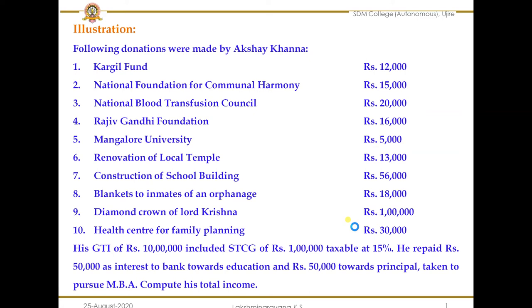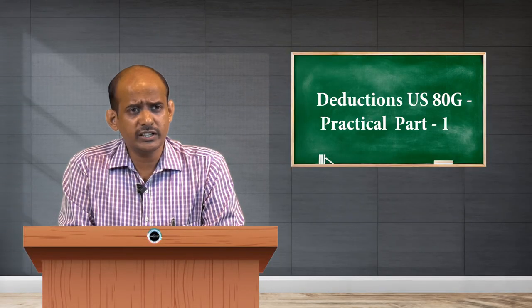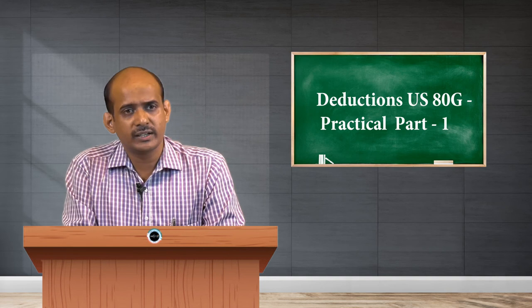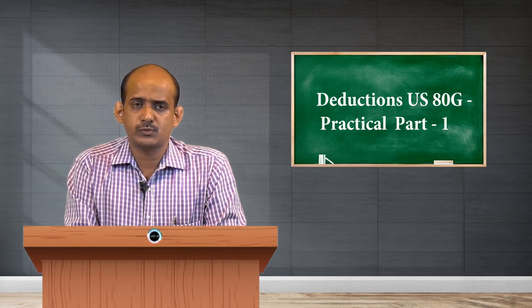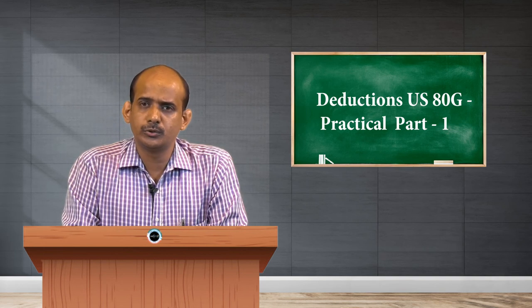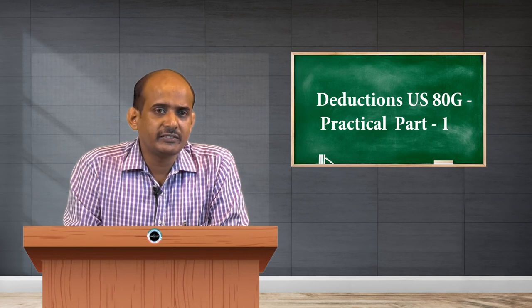So these are the 10 donations. When we classify them, 5 donations — from Kargil Fund to Mangalur University — fall under the 'without limit' category. Of the remaining 5 items, 3 do not qualify for deduction, and only 2 items qualify under the 'with limit' category. His gross total income is rupees 10 lakh, which includes STCG of rupees 1 lakh. When calculating the adjusted total income, we can use this 1 lakh to reduce the gross total income.